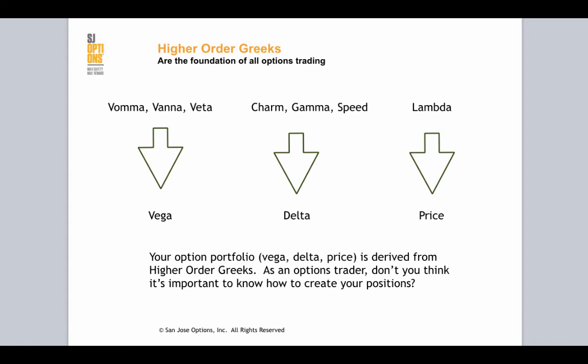So what happens is you have an option trader that's managing all this money with options with a lot of leverage, and they're trying to manage their delta. I would say less than 1% of traders actually delta-Vega hedge. So you have 99% of traders attempting to manage their portfolio on the delta alone.